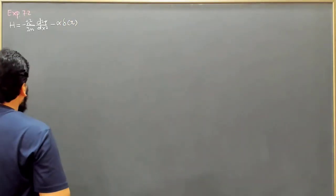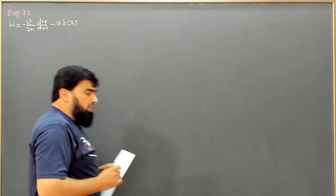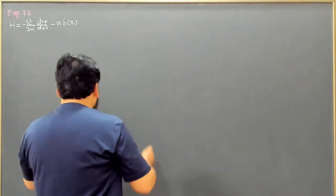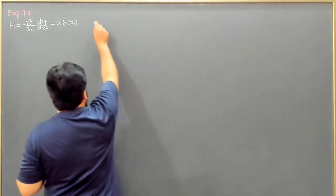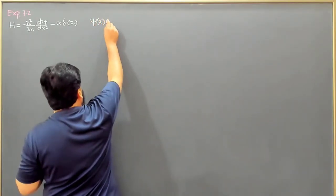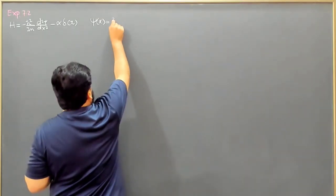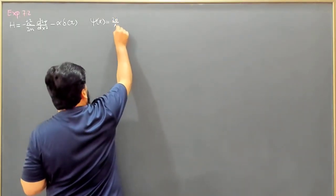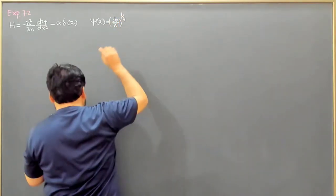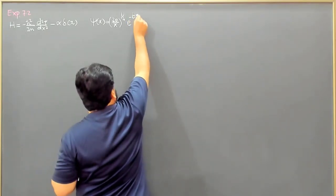This is the potential. As usual, we will take the Gaussian trial function. The trial function ψ(x), written in normalized form, is (2b/π)^(1/4) times e to the power minus bx².